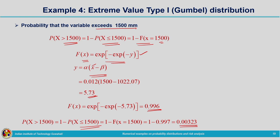This is how we use Gumbel's distribution: first find the parameters, then compute the probability. The same methodology applies to other distributions. Now let us move on to solving examples related to risk analysis.